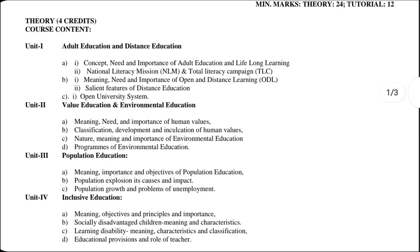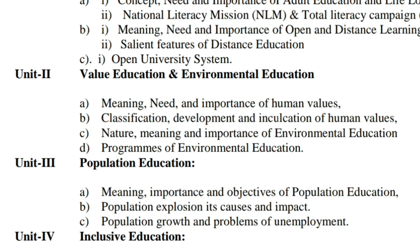The course content for theory portion covers four credits. Unit First is Adult Education and Distance Education. Topics include: (A) concept, need and importance of adult education and lifelong learning; (B) National Literacy Mission (NLM) and Total Literacy Campaign (TLC); (B1) meaning, need and importance of Open and Distance Learning (ODL); (B2) salient features of distance education; and (C) open university system.